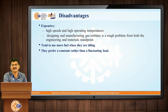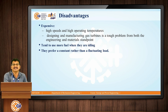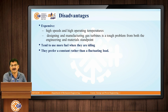These are the disadvantages: it is expensive because it generally operates on natural gas, it tends to use more fuel when idling, and it prefers a constant rather than a fluctuating load. If there is a fluctuating load, there is a problem — it does not deliver the required power effectively.